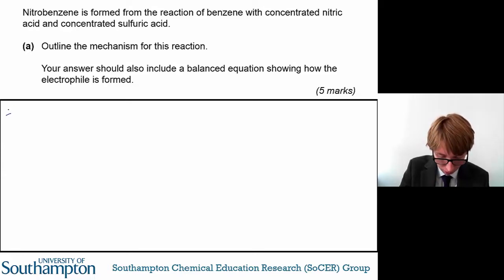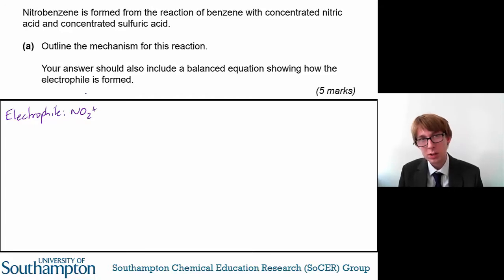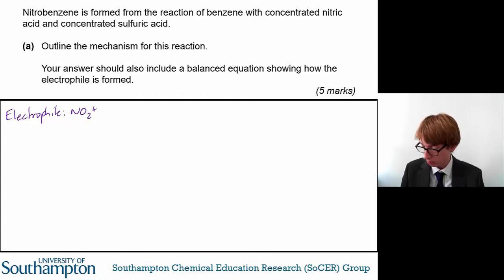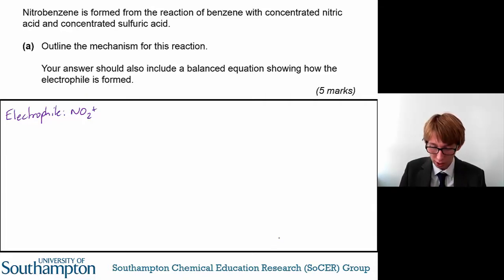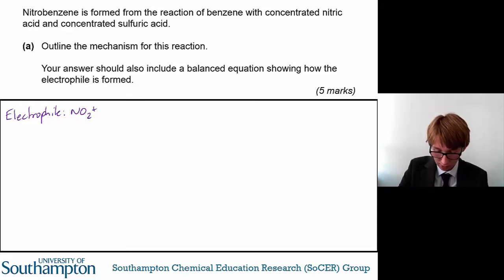For a nitration reaction, the electrophile is the NO2+. So how do we form this NO2+? Well, what you need to do is consider the two other reactants: the nitric acid and the concentrated sulfuric acid.